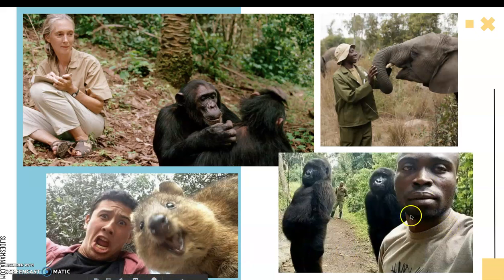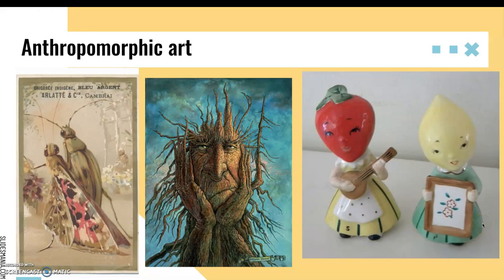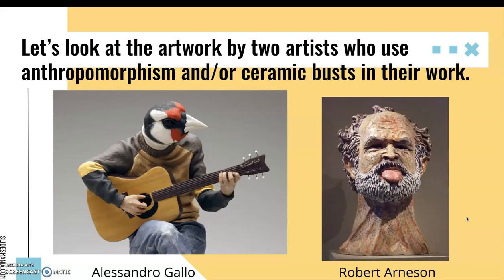This is a selfie of a man who takes care of gorillas in the forest, and these two gorillas were standing on their hind legs — but the way it's posed, it looks like a selfie. Anthropomorphic art has been used in many ways by artists: illustrations, paintings, sculptures. In the following assignment, you're going to look at and analyze artwork by two artists who use anthropomorphism and ceramic busts in their work — Alessandro Gallo and Robert Arneson.